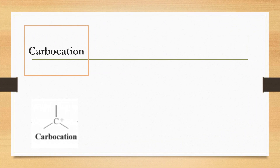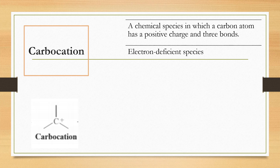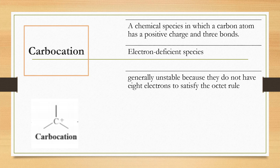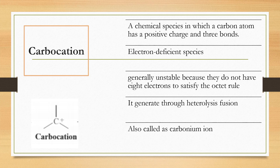For carbocations, a carbocation is a chemical species in which a carbon atom has a positive charge and three bonds. Carbocations are also electron-deficient species and are generally unstable because they do not have eight electrons to satisfy the octet rule. Carbocations are generated through heterolytic cleavage and are also called carbonium ions.